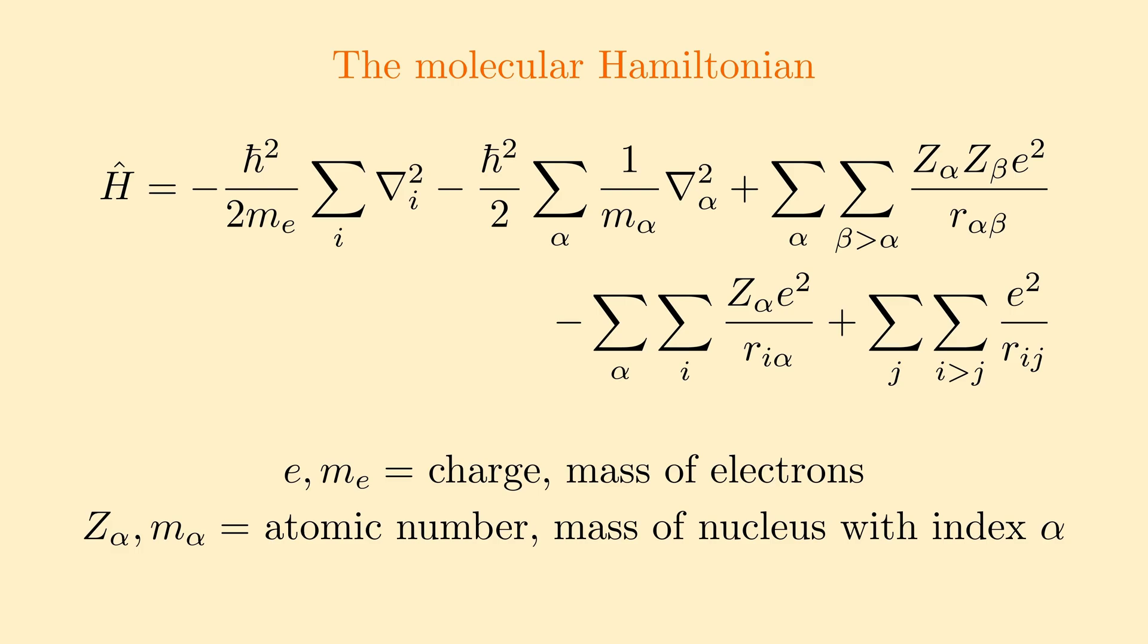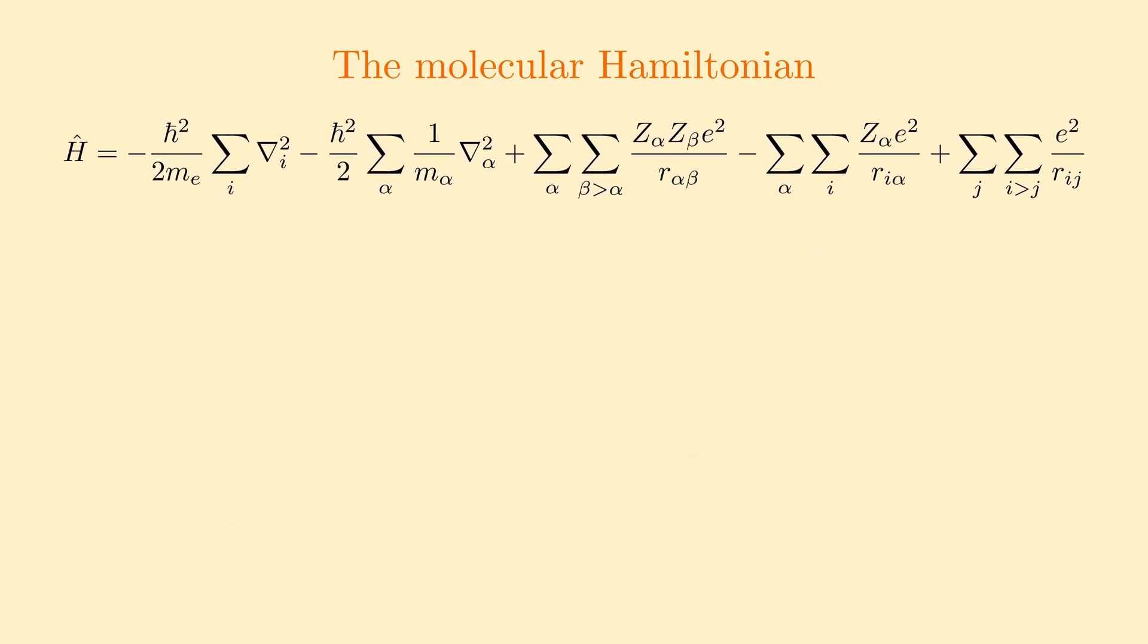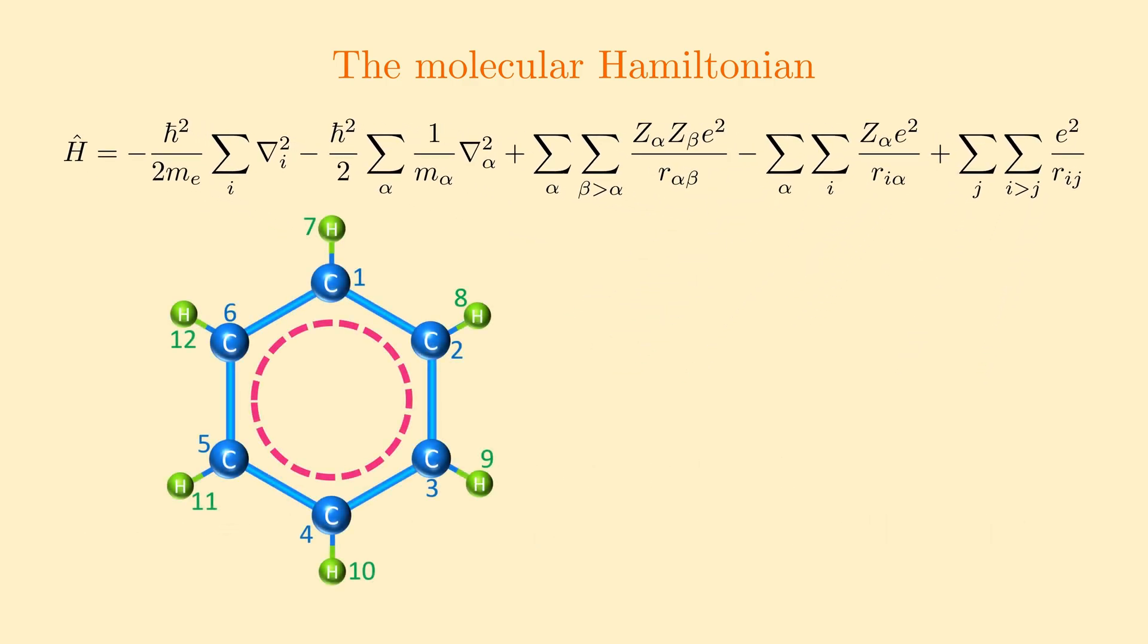Here the indexes alpha and beta refer to the nuclei and i and j refer to the electrons. For example, in benzene molecule, which has 6 carbon and 6 hydrogen nuclei and the total of 42 electrons, alpha and beta run from 1 to 12 while i and j run from 1 to 42.